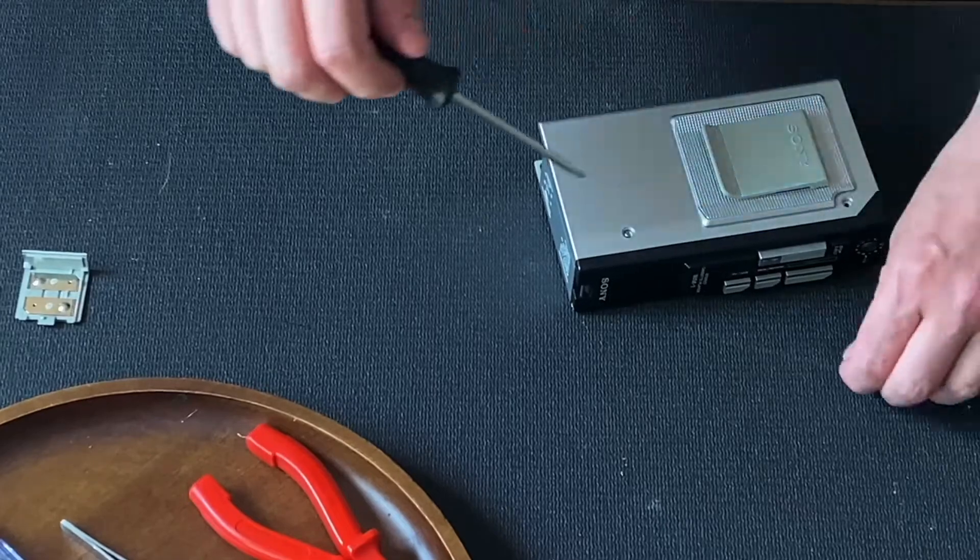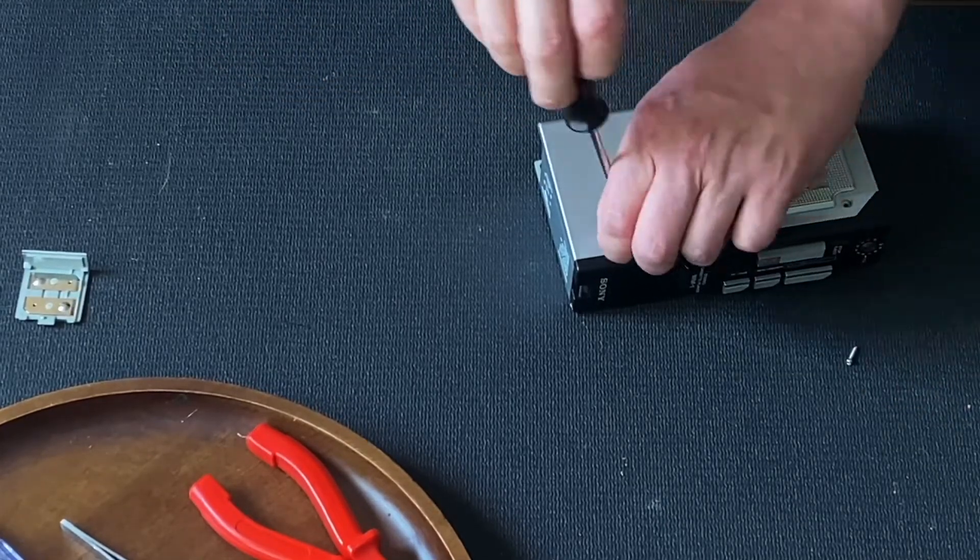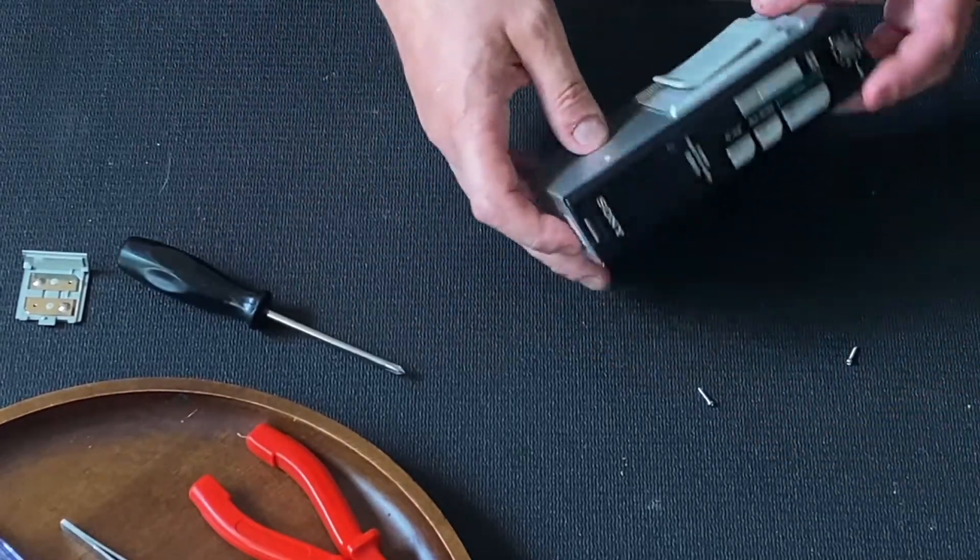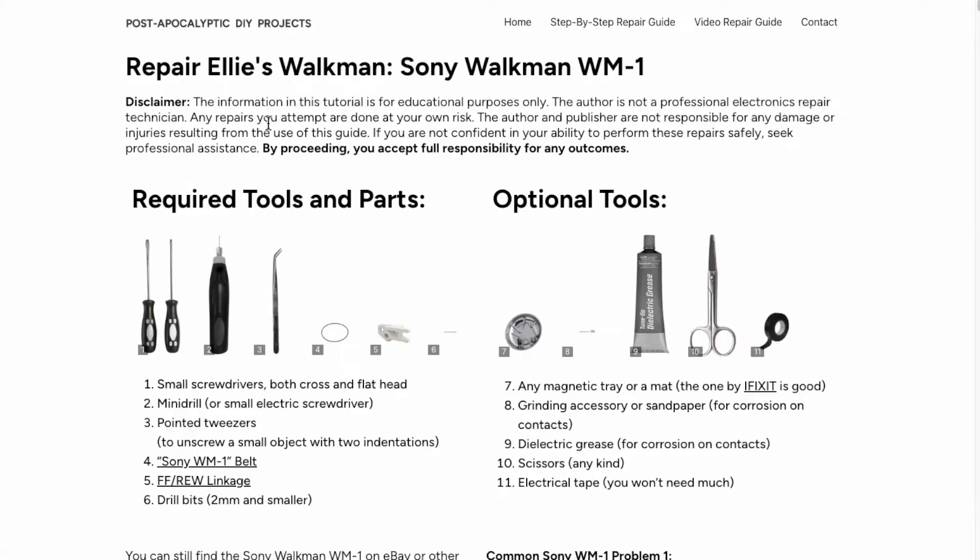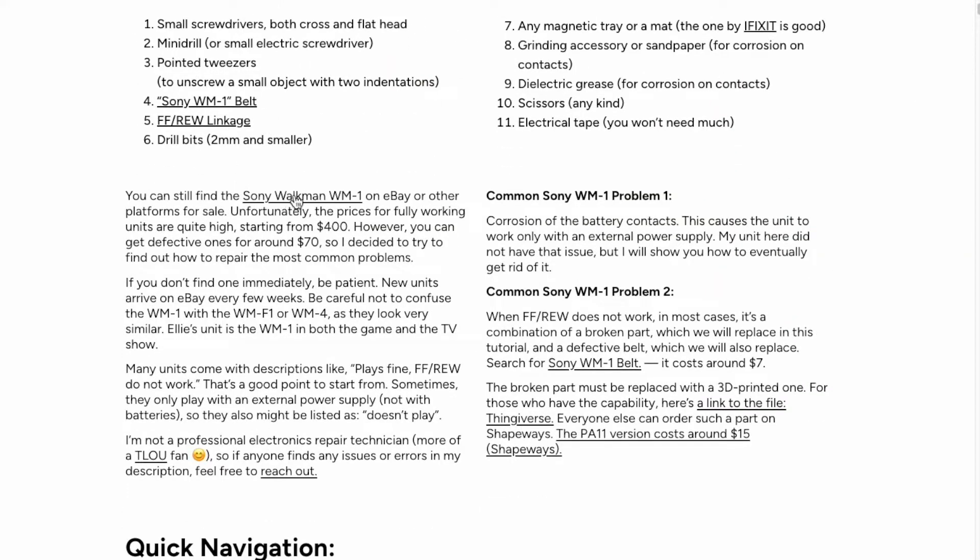Welcome to our video guide on repairing a vintage Sony Walkman WM1. Before we dive in, let's talk about finding one of these iconic devices. You'll find Sony Walkman WM1s on eBay or other platforms, but be prepared, fully working units can cost around $400 or more.